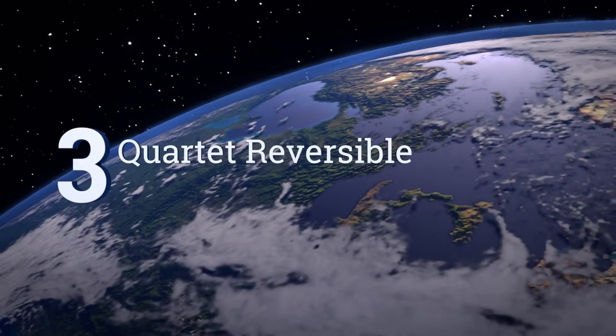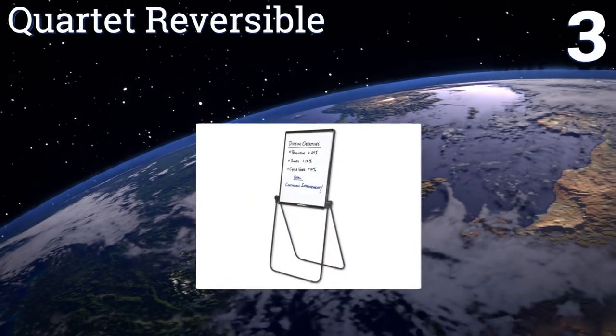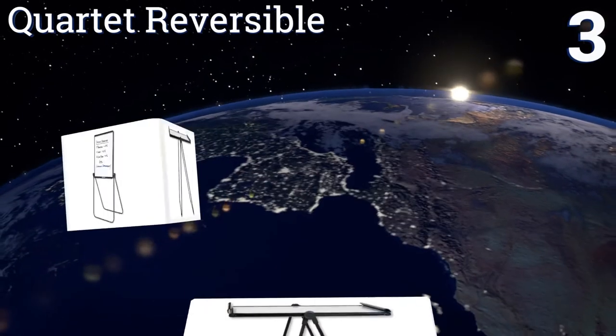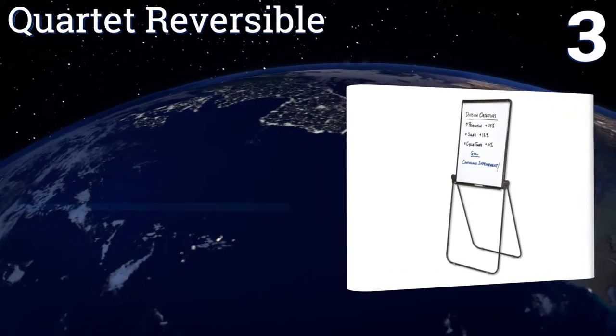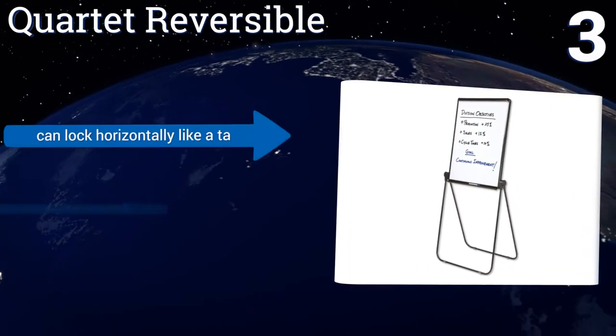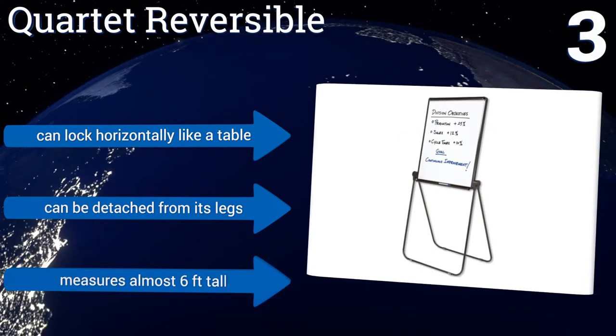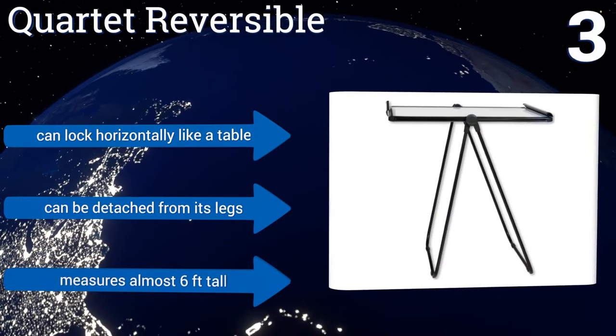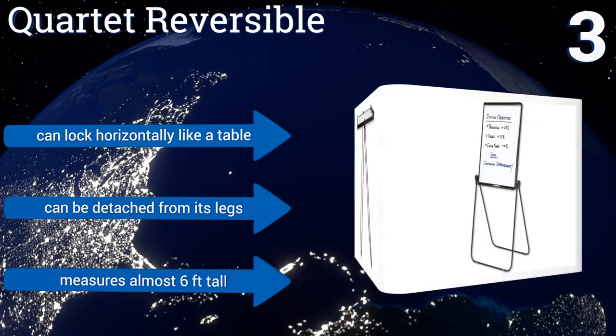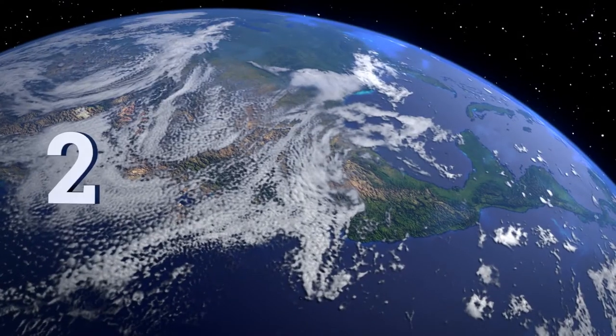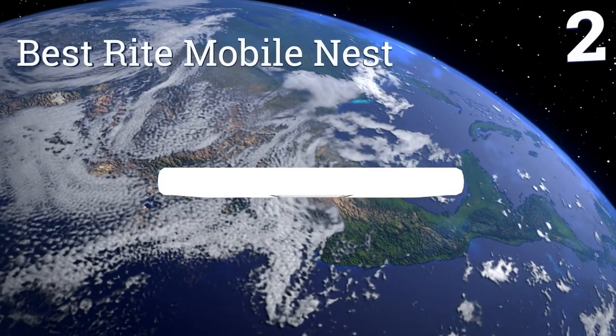Nearing the top of our list at number three, the sleek black frame of this Quartet Reversible, combined with its high standing base, make it ideal for corporate presentations. The melamine writing surface is reversible so presenters can flip it over rather than having to erase important notes on the fly. It can also lock horizontally like a table and can be detached from its legs. It measures almost six feet tall.